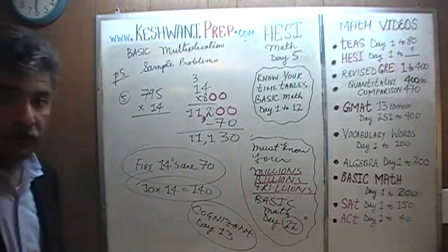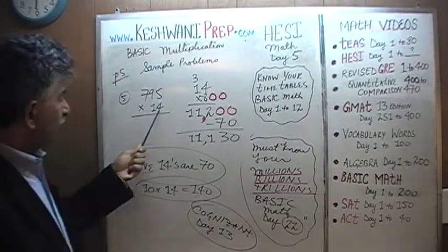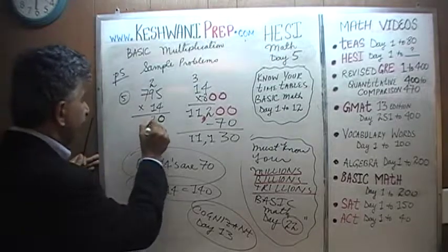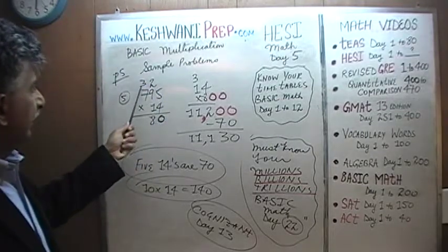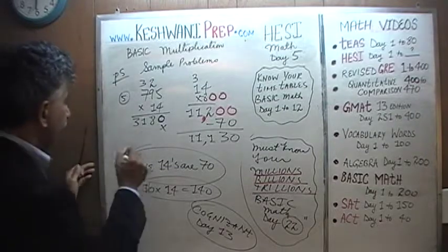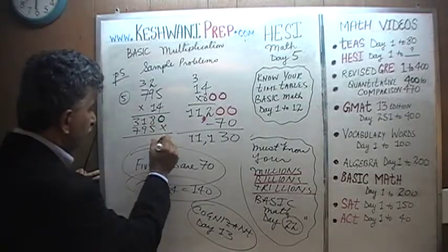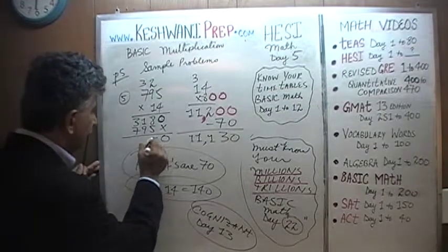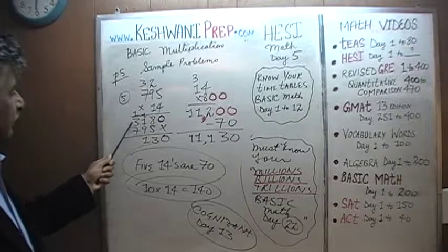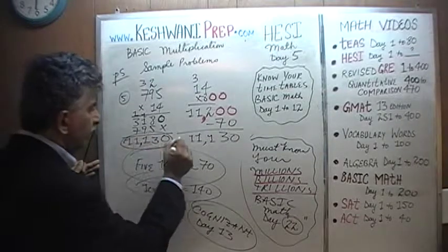Let's confirm by doing it out: 5 fours are 20, carry 2; 9 fours are 36, plus 2 is 38, carry 3; 7 fours are 28, plus 3 is 31. Then multiplying by 1 gives 795. Adding: we get 3,180 plus 7,950, which equals 11,130 — exactly as we calculated. No different.